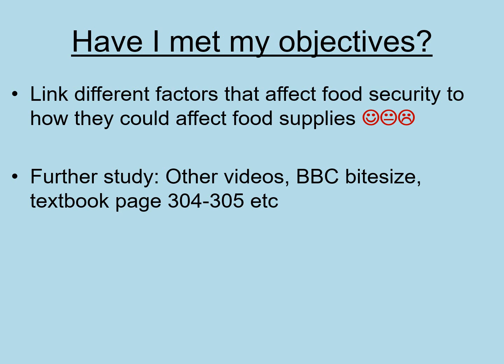Today's main objective was to link the different factors that affect food security to how they affect food supplies. Use a smiley, middle, or sad face to rate your confidence level. For further study you could check out YouTube channels like Primrose Kitten or the Amoeba Sisters, BBC Bitesize, your AQA GCSE Biology textbook on Caboodle at pages 304–305, or other sites such as GCSEPod and Seneca Learning. Well done for all your work today!